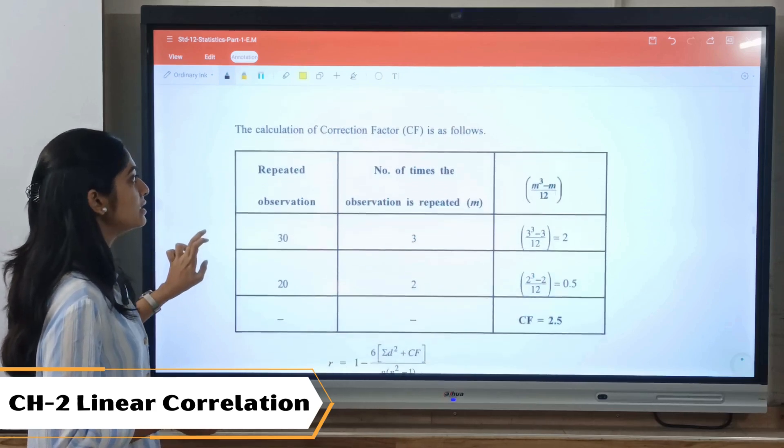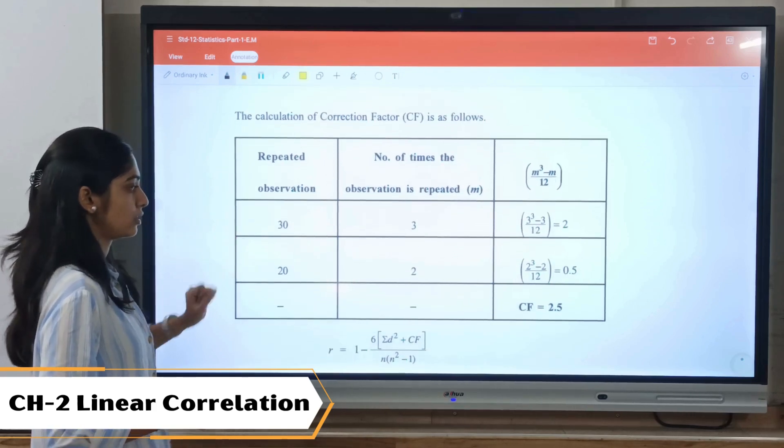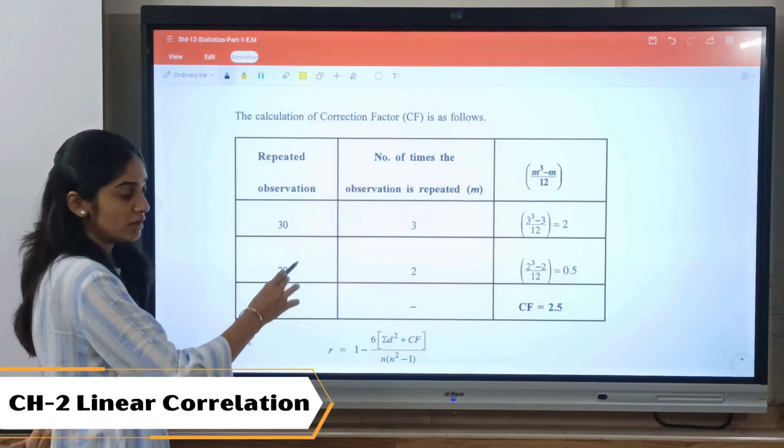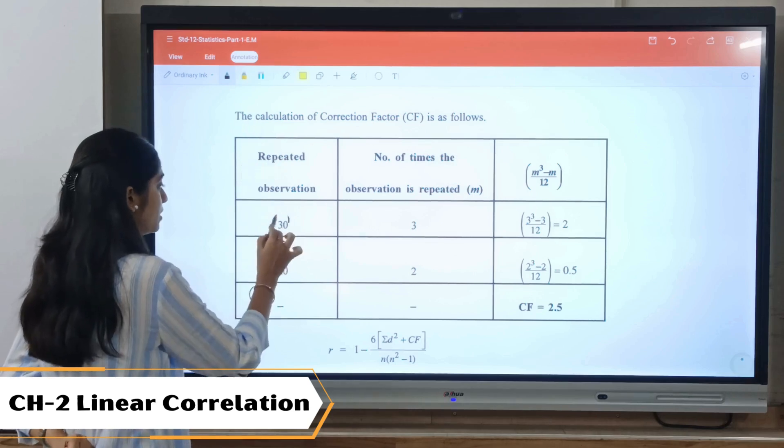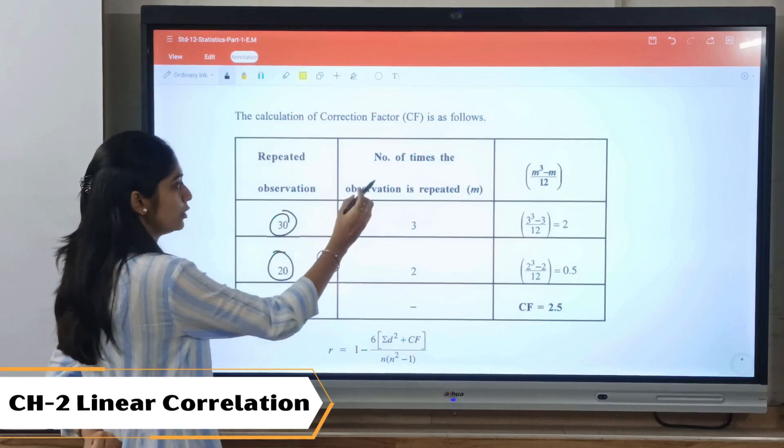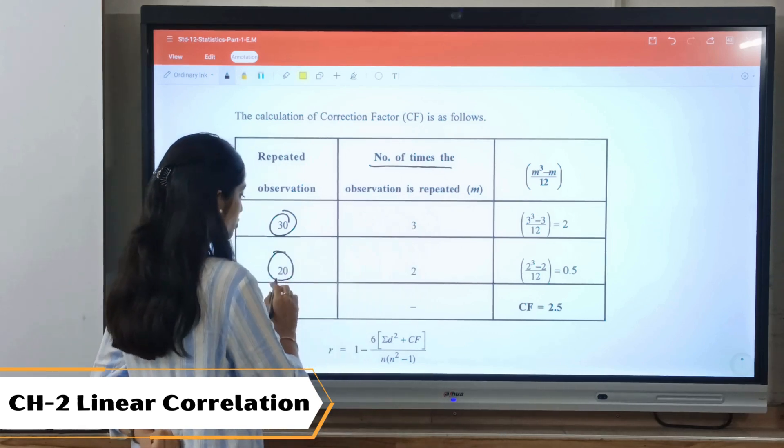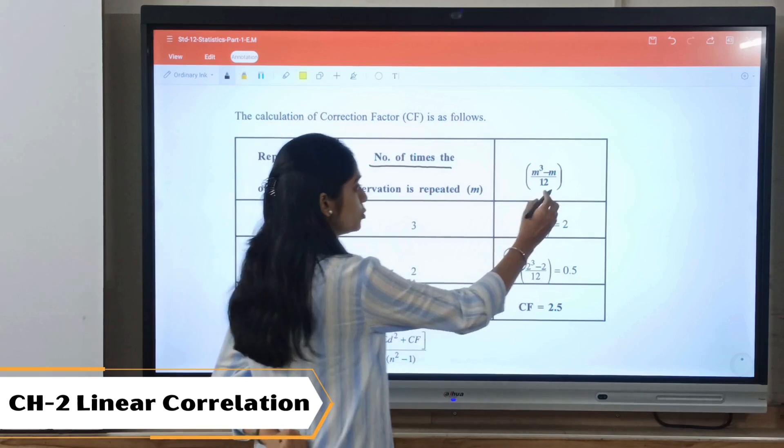Now, cf: first we need to write down the observation which is repeated. Now here 30 and 20 were repeating. Then we need to write down the number of times they are repeated: 30 was repeated three times, 20 was repeated two times.